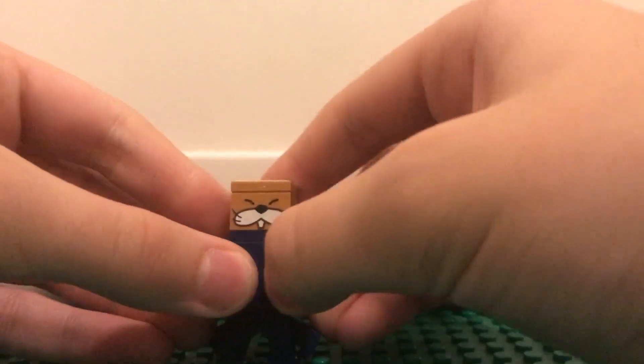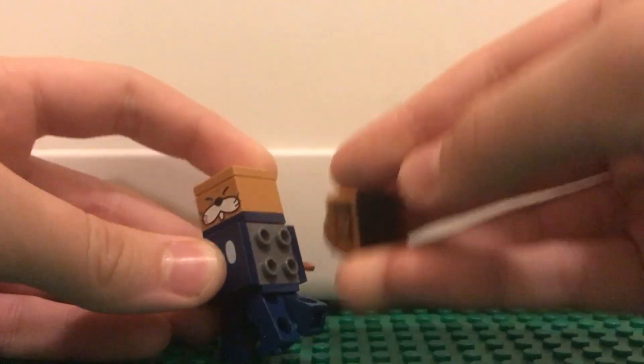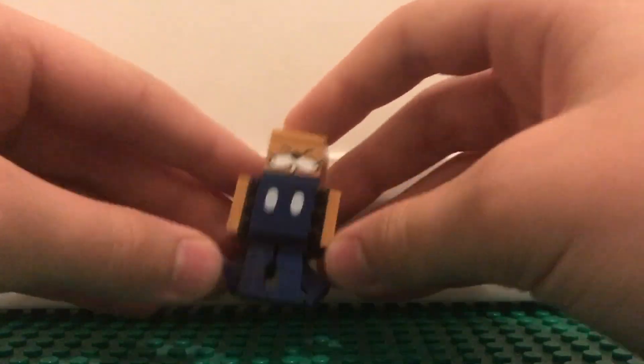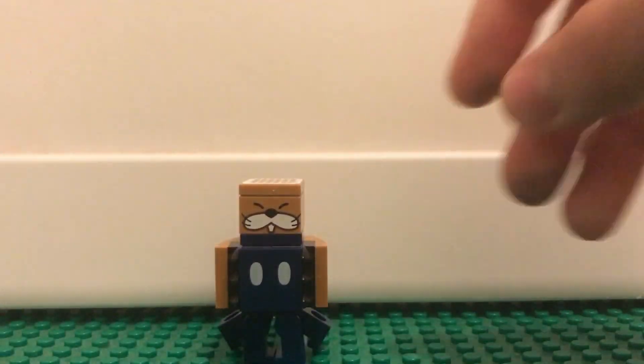Okay, so here I just put Monty Mole's arms onto the sides of the Bob-omb. Which, wow, this is a really cursed figure. Oh no. Also, for some reason, like these are the same LEGO color. But like this one, okay, these are the same LEGO color.